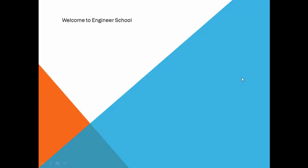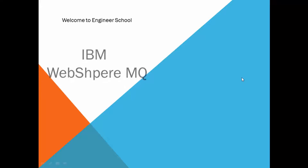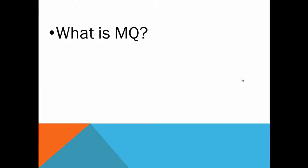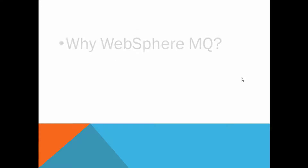Welcome to Engineering School. This time we came with an MQ tutorial. What is MQ? MQ is a middleware technology to share information between two applications. M stands for message and Q stands for queuing.